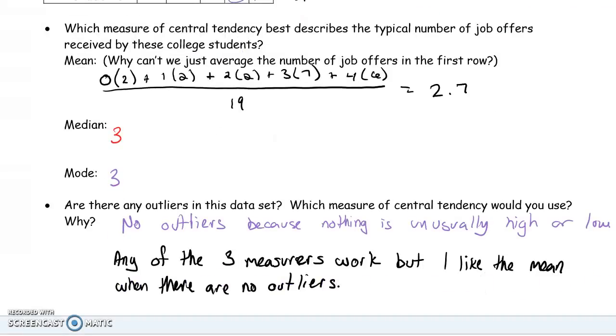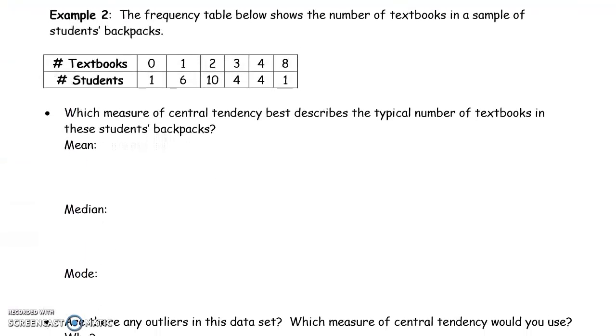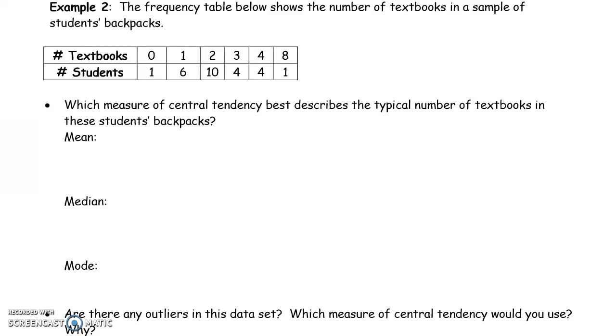All right, so why don't we go to the next page. You guys go ahead and press pause and try to do the mean, median, and mode for this frequency table and then determine if there's outliers. And if so, or if not, which central tendency you would use.